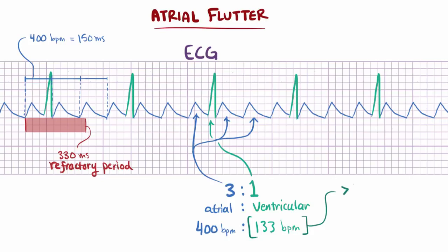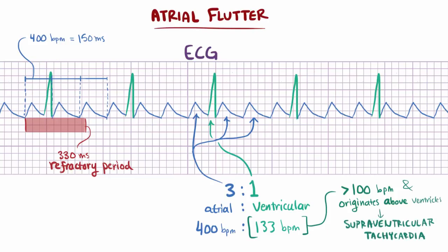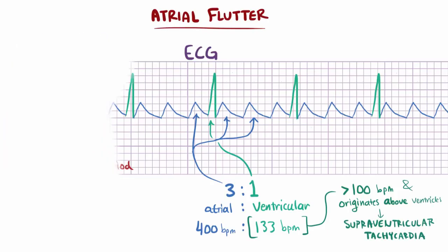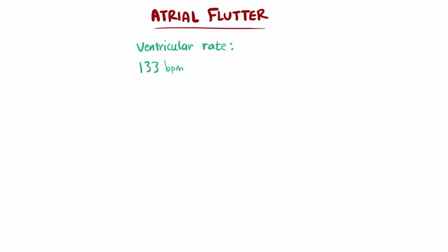Because the ventricles are contracting at a rate greater than 100 beats per minute and the source originates above the ventricles, this is considered a supraventricular tachycardia. Having higher ventricular rates like 133 or 175 beats per minute isn't usually life threatening, but if it's happening at rest, it's generally not something most people want to experience.